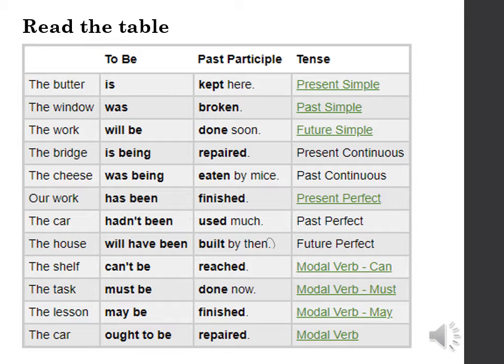Past perfect: 'The car hadn't been used too much.' Future perfect: 'The house will have been built by them.' Modal verb 'can': 'The shelf can't be reached.' Modal verb 'must': 'The task must be done now.' Modal verb 'may': 'The lesson may be finished.' Other modal verbs — for example: 'The car ought to be repaired.'